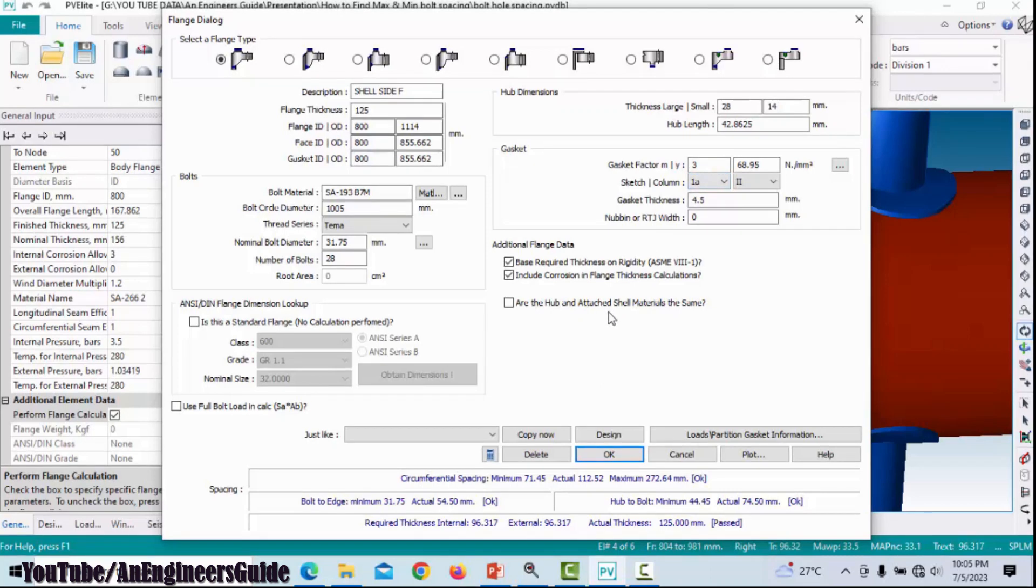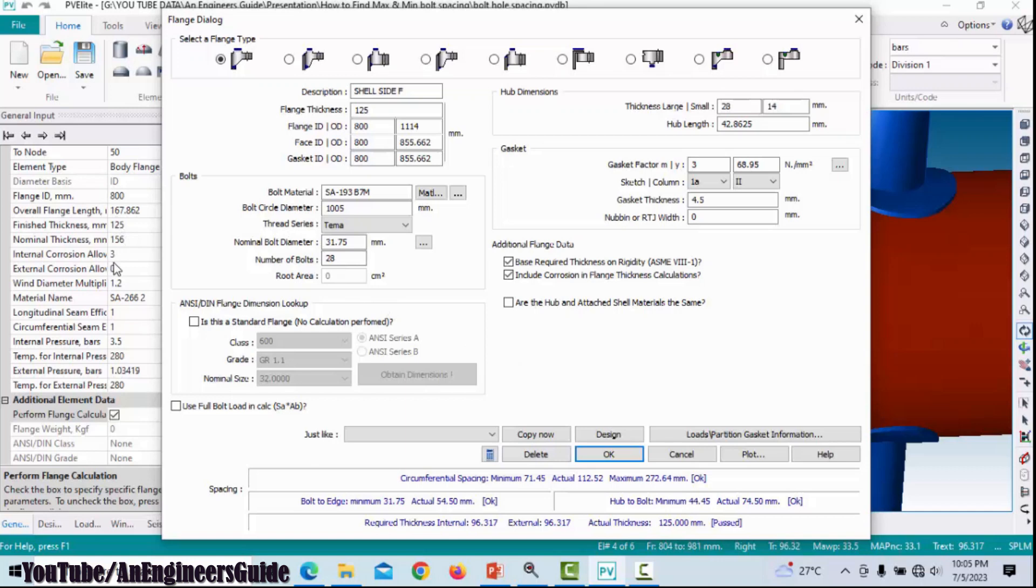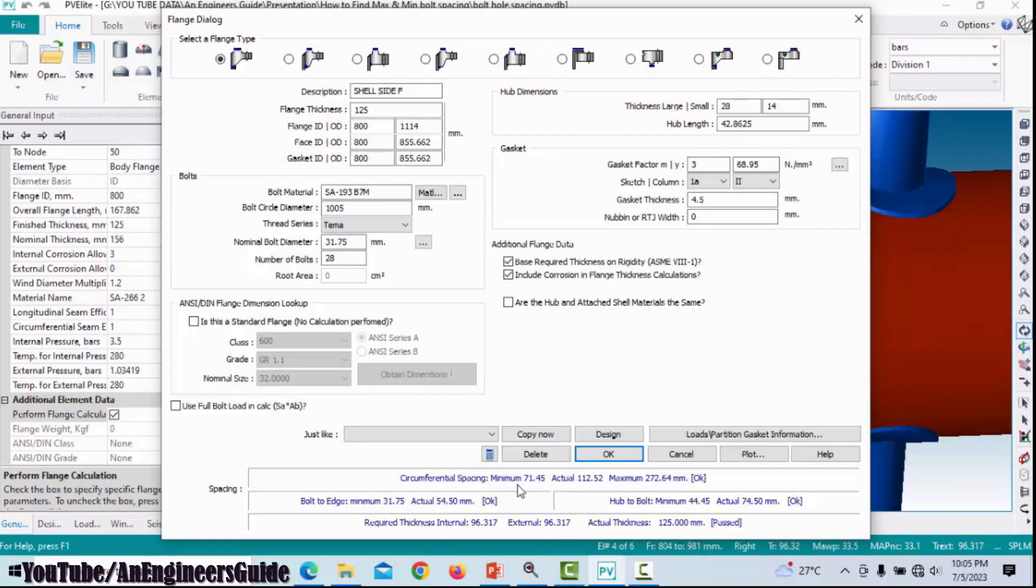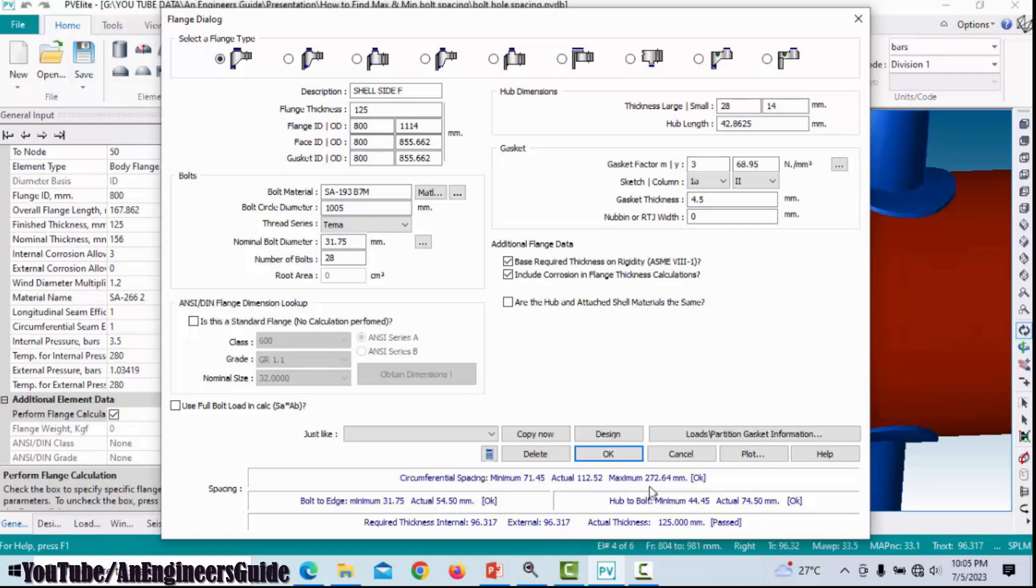The corrosion allowance we have considered is 3 mm. So by using all those data, here we got the ready-made results: minimum bolt hole spacing is 71.45 mm and maximum bolt hole spacing is 272.64 mm.